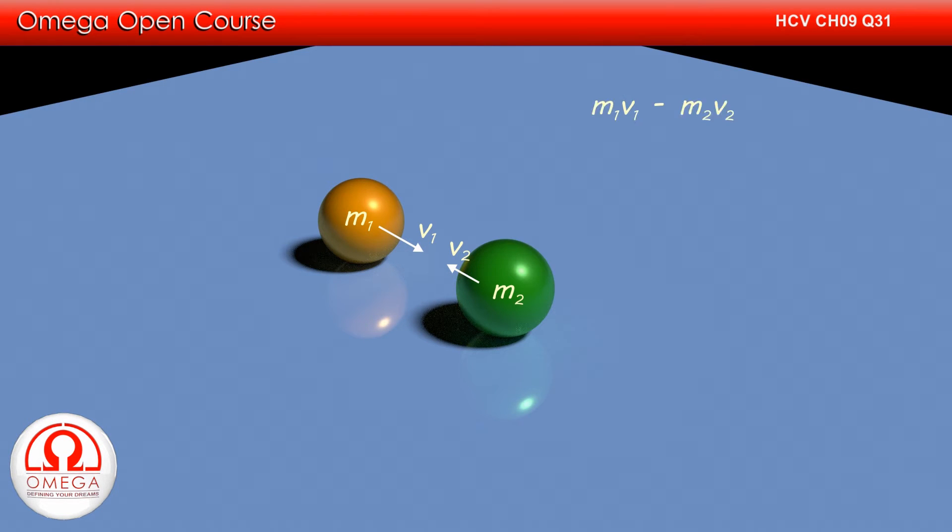The initial momentum of the 0.5 kg ball is m1 v1. Since the direction of motion of the 1 kg ball is opposite, its momentum is minus m2 v2. Thus, the initial momentum of the system is m1 v1 minus m2 v2.